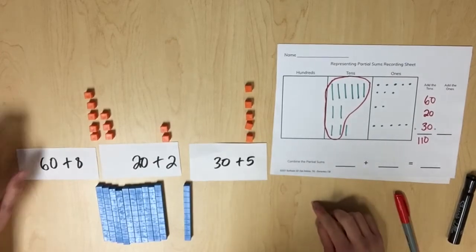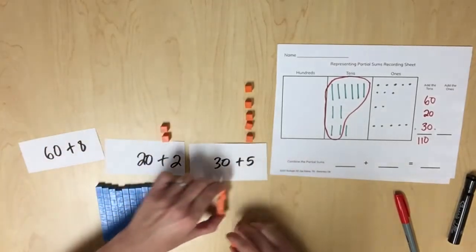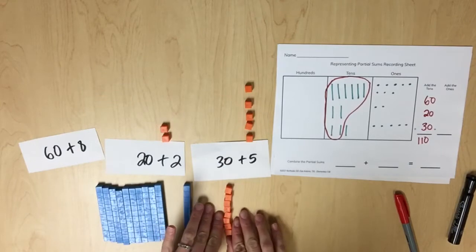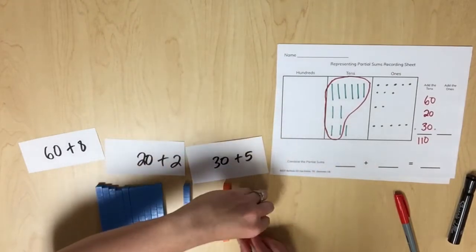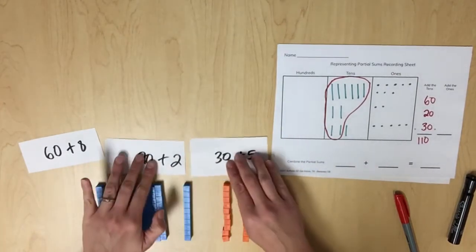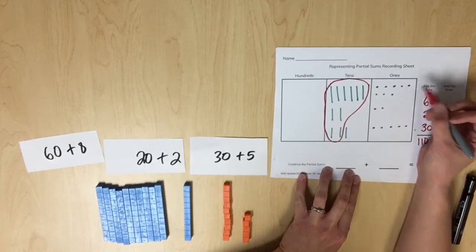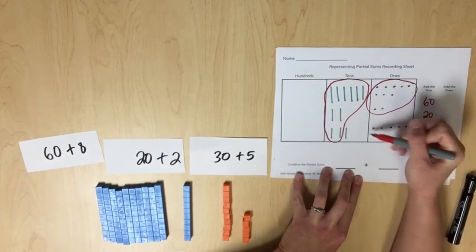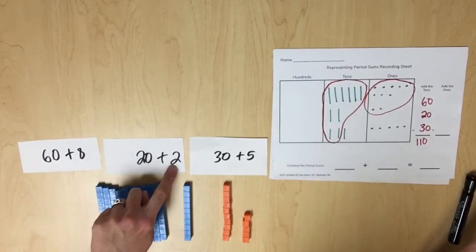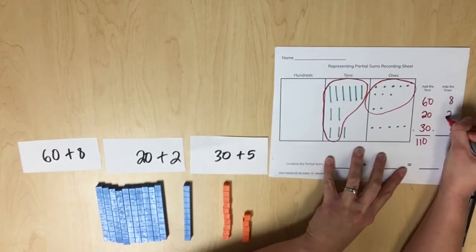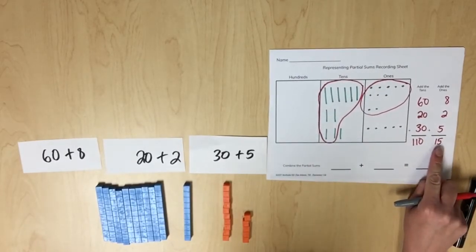Next we'll combine the ones and record the corresponding equation to show the partial sums of the ones. We have 8 plus 2, that's 10, plus 5 more — that's 15. The value of the ones is 15. In our pictorial representation, 8 plus 2 more can be used to compose 10. So 8 plus 2 plus 5 is 15. The partial sum of the ones is 15.